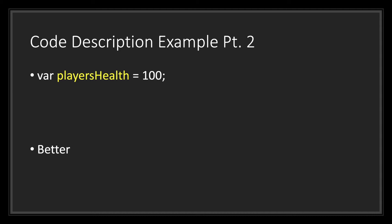By naming our variable something meaningful, we get rid of one line of comment and yet the story we're telling other programmers — that this variable represents the player's health — is still clear. We can do even more to explain intent to other programmers. As you can see here, we have let other programmers know that we intend to use this variable for the player's health and that this variable should only be an integer. This is an even better way of describing intent without using a comment. I'm not saying you shouldn't use comments, but rather you should first maximize the use of meaningful names and code intention before using comments.